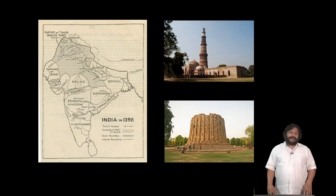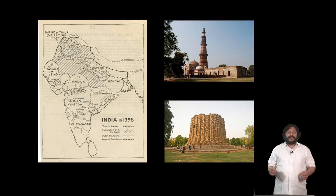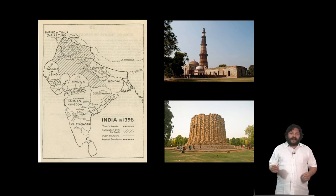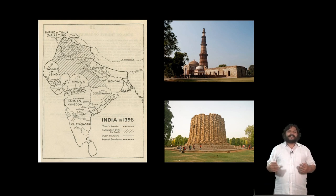This dynasty, called the Mamluk dynasty — which was not really a dynasty but a succession of sultans — built a number of very important monuments, such as the Qutub Minar, the Alai Darwaza, and also an unfinished minar that you see in the Qutub complex at Delhi. Their architecture derives very heavily from Afghanistan, where the Ghorids came from.